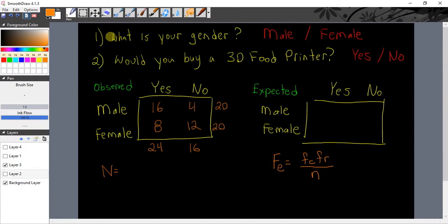Now, you go out in the world and you ask people these two simple questions. One, what is your gender? We get males and we get females. And then you ask them, would you buy a 3D food printer? You have yes and you have no. Here's our hypothetical data. You can see here we have 20 males and we have 20 females. So you're a good researcher and you try and get an equal number of males and females. It's not necessary, but the numbers are cleaner when you do.